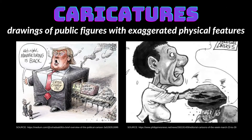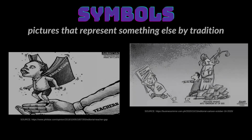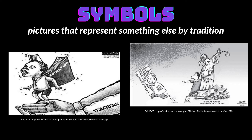First are caricatures — these are drawings of public figures in which certain physical features are exaggerated. Notice these examples: we have a caricature of former U.S. President Donald Trump, and another one of the President of the Philippines, Rodrigo Duterte. Second are stereotypes — these are images used to represent particular groups. A stereotypical cartoon of a Filipino would look like this one. Third are symbols — these are pictures that represent something else by tradition. For example, a book is a symbol of education or knowledge, while the statue symbolizes justice.